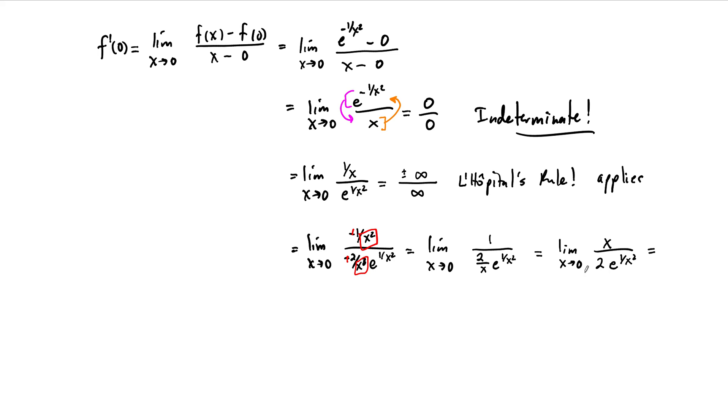And now when we just plug into this limit, on top we get a 0. On the bottom we get 2 times infinity. So very small over very big—that's very small. And so the limit exists and equals 0.